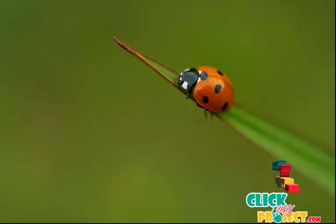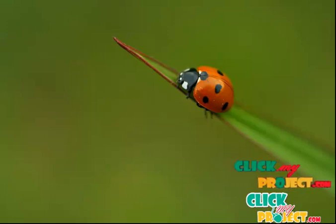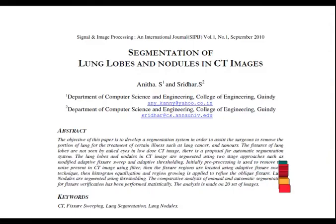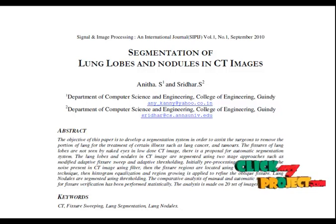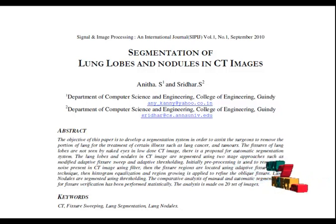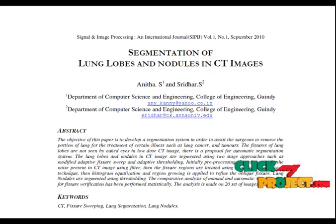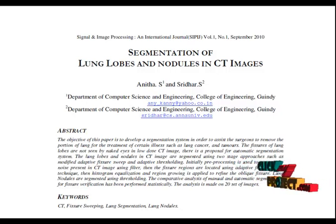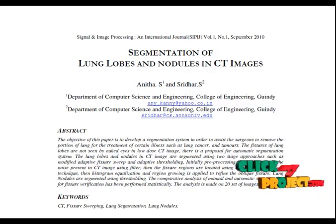Welcome to clickmyproject.com. Here we discuss segmentation of lung lobes and nodules in CT images. We propose a method to detect the nodules and fissures. We are segmenting the lung fissure and lung lobes using a two-stage approach, such as modified adaptive fissure sweep and adaptive thresholding.